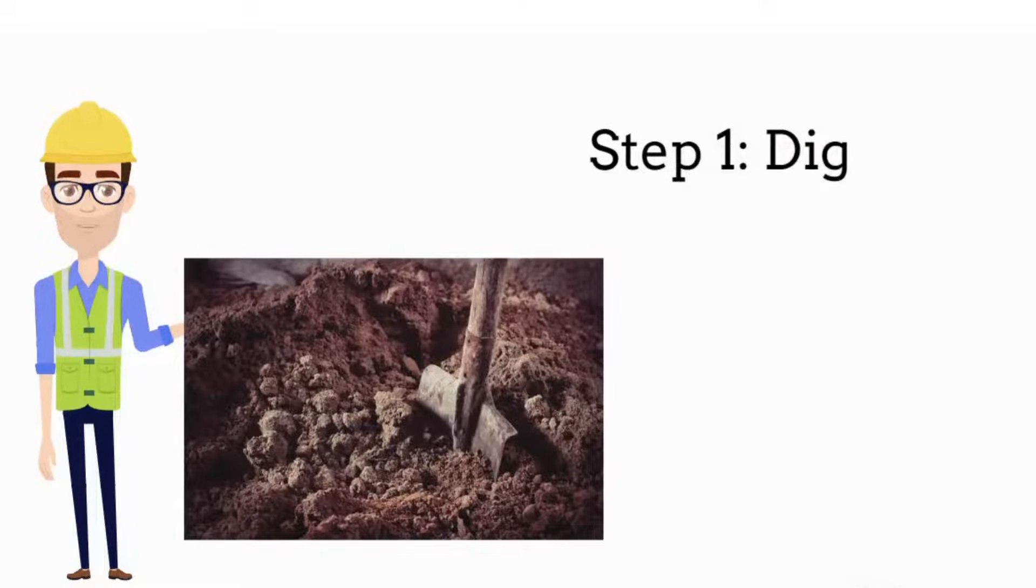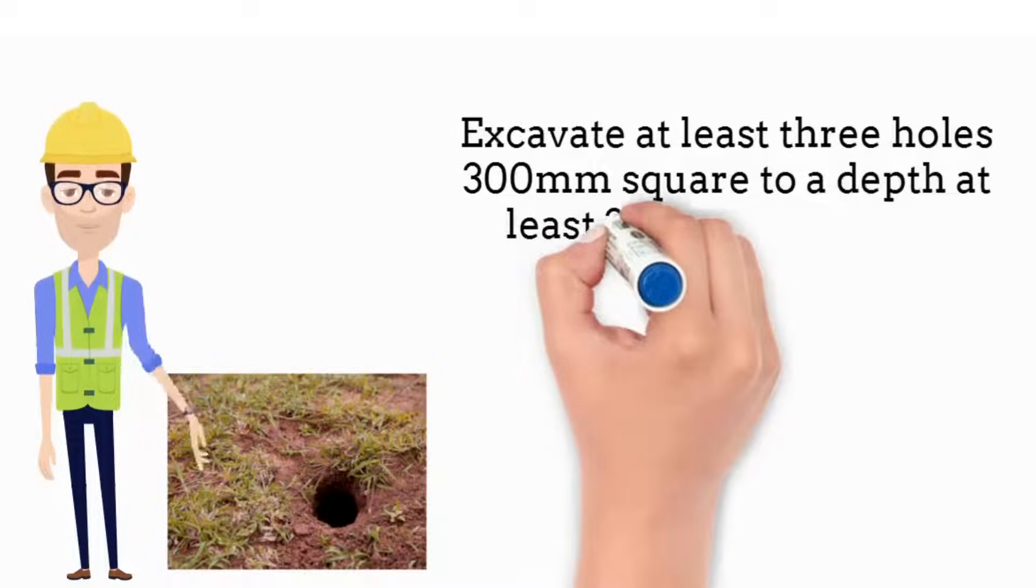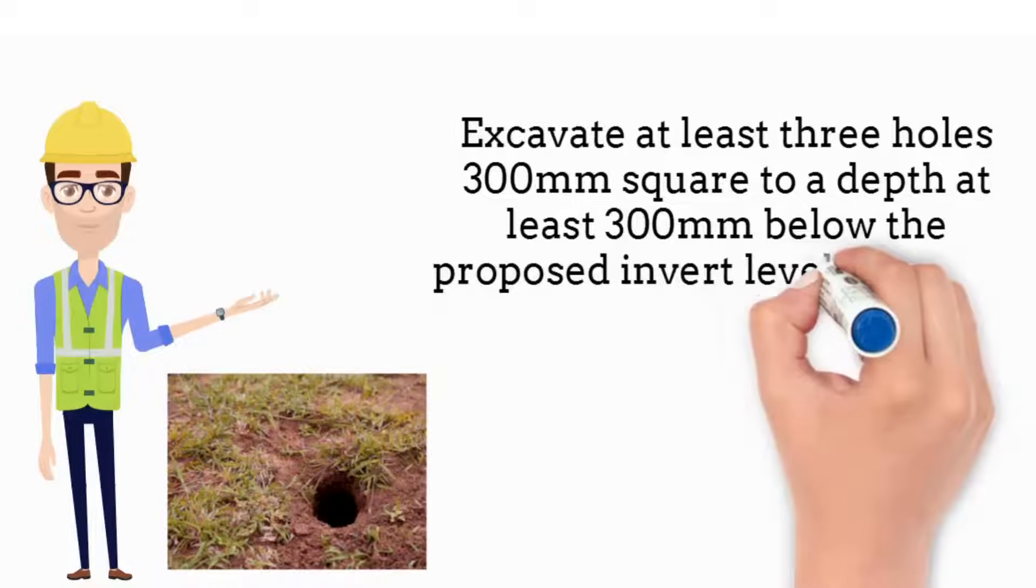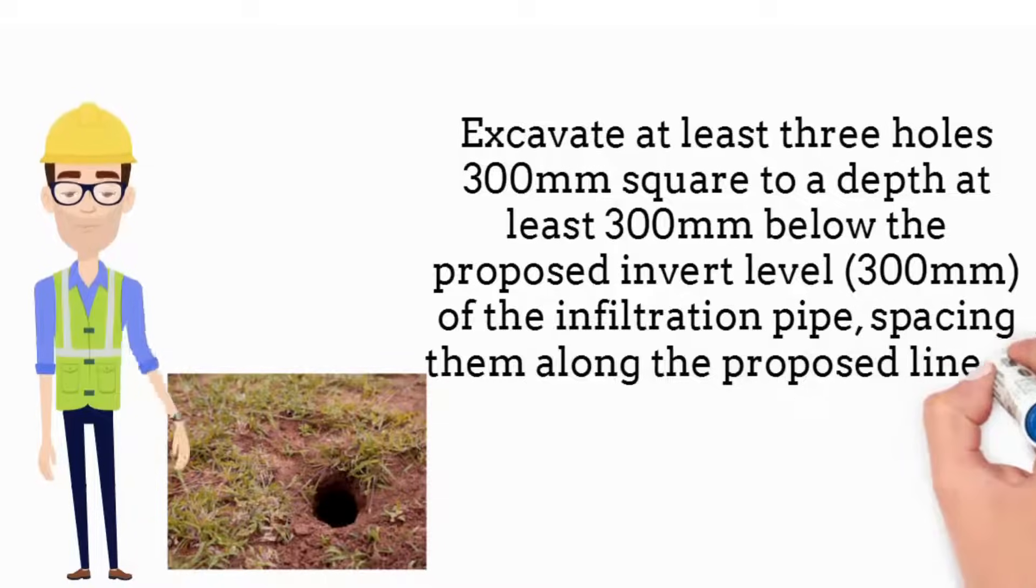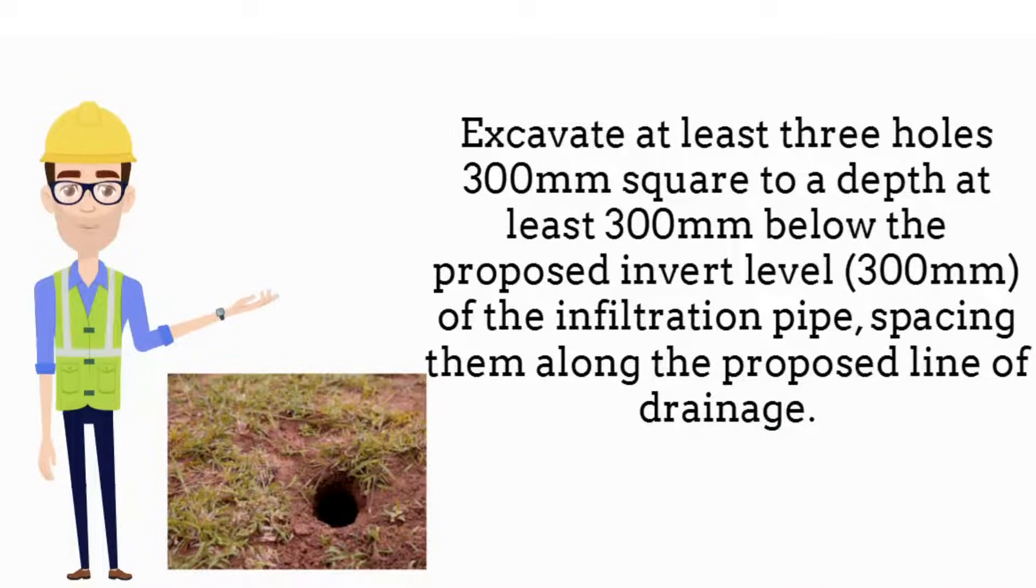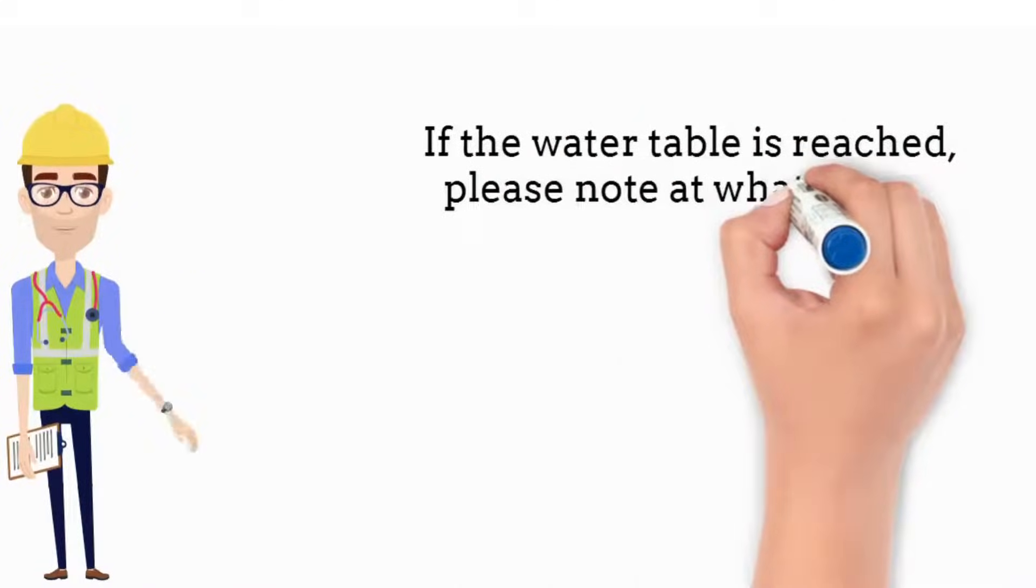Step 1: Dig. Excavate at least three holes 300 mm square to a depth at least 300 mm below the proposed invert level of the infiltration pipe, spacing them along the proposed line of drainage. If the water table is reached, please note at what depth.